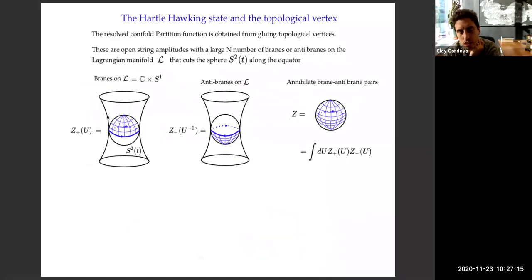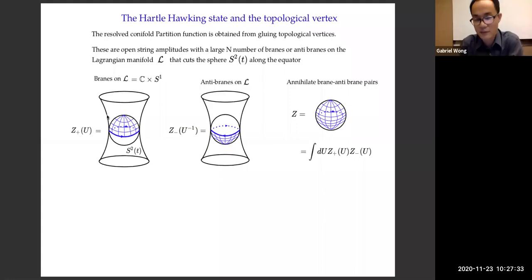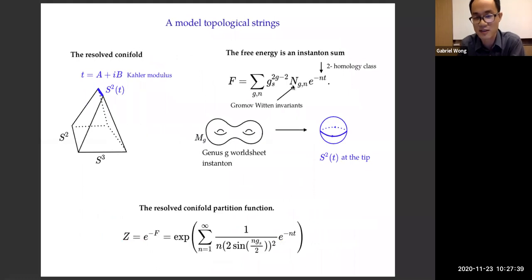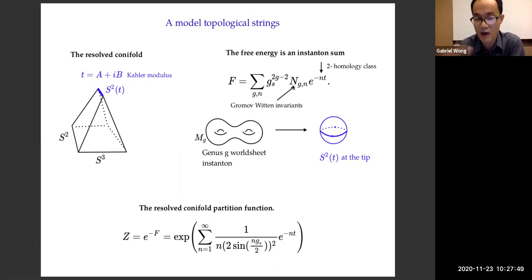The reason the truncation is justified is partly because the topological string is twisted — it's a cohomological theory that doesn't know everything about strings on these geometries, just knows about some supersymmetric sector. That's why the free energy becomes an instanton sum. Even with that simplification, there are some degenerate instantons we are throwing away, but we're consistently throwing them away. There's a part of the partition function for the resolved conifold that just comes from shrinkable worldsheets — it just multiplies Z by another factor that can be divergent. In these papers by Vafa and collaborators, they fix it using other methods. I really think it just decouples, and we can discuss this more in the discussion session.